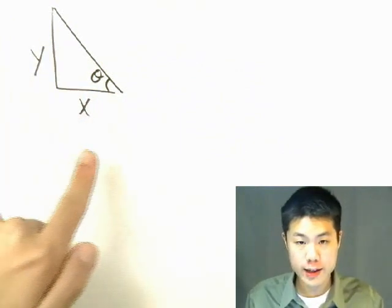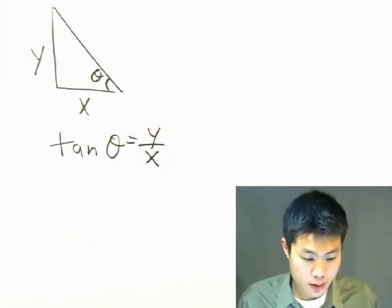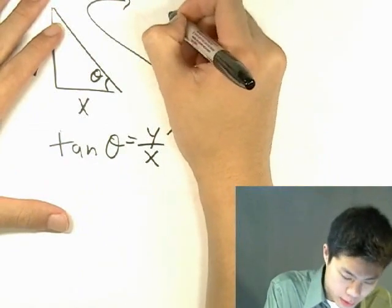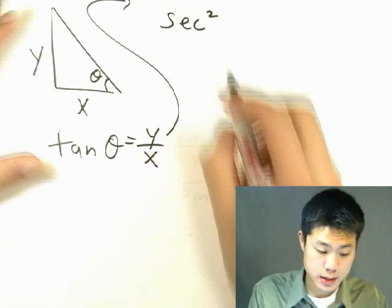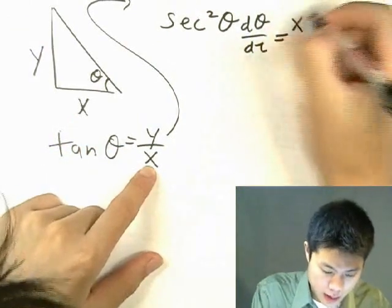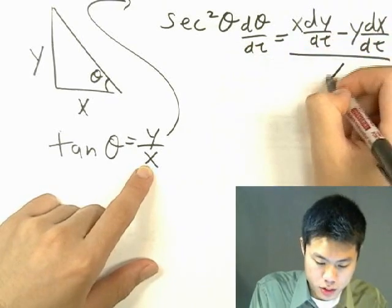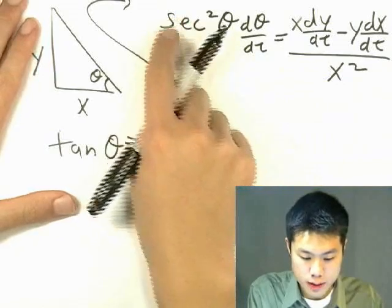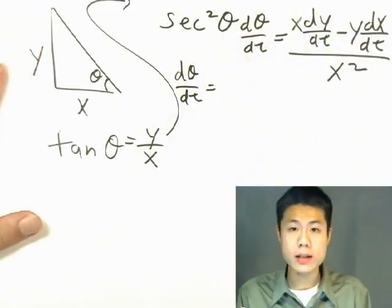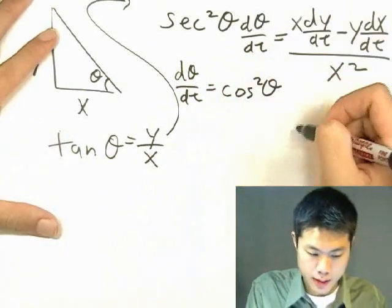The equation relating Y, X, and theta is: tangent(theta) equals Y over X. Now differentiate both sides implicitly with respect to time. The derivative of tangent is secant squared, so: secant squared(theta) times d(theta)/dt equals, by the quotient rule, [X(dY/dt) minus Y(dX/dt)] divided by X squared. Rearranging, d(theta)/dt equals cosine squared(theta) times [X(dY/dt) minus Y(dX/dt)] divided by X squared.